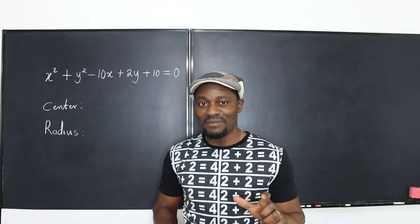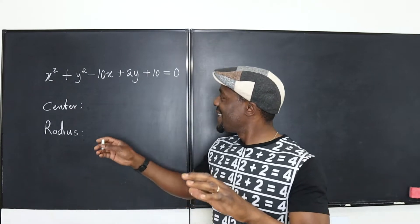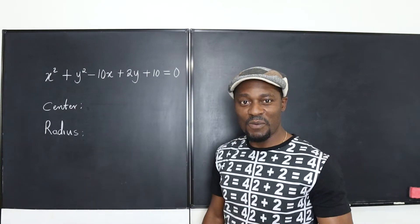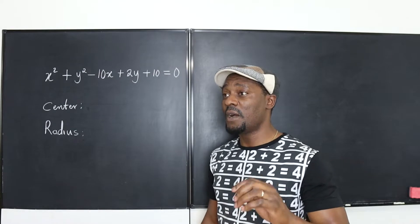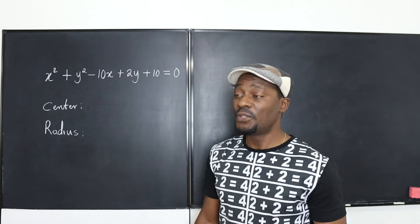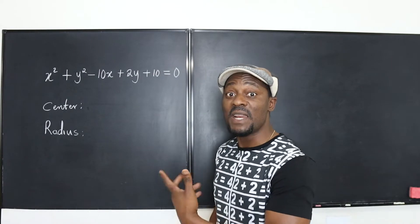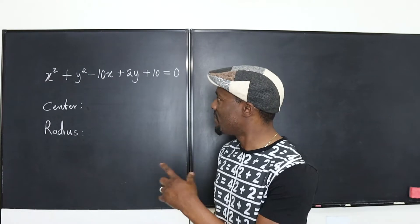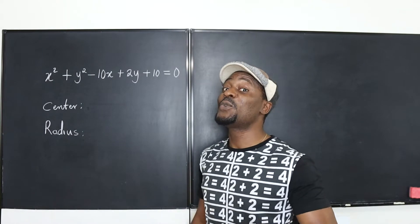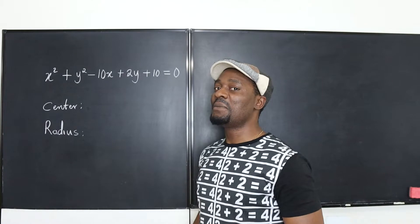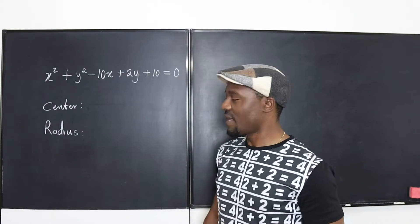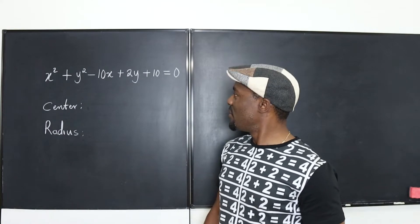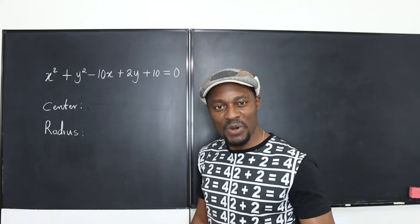But there's a slight problem. You're given the general form of a circle, and it's almost impossible to know what the center is just by looking at it. We have to do additional calculations to tell what the radius is, but with practice you'll be able to see from the general equation. The radius might require more work.